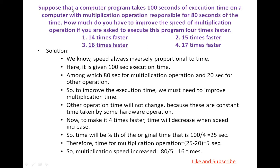Second question: Suppose that a computer program takes 100 seconds of execution time on a computer, with multiplication operations responsible for 80 seconds of the time. How much do you have to increase the speed of the multiplication operation if you are asked to execute this program 4 times faster? We know that speed is always inversely proportional to time. It is given that 100 seconds of execution time, among which 80 seconds for multiplication operations and 20 seconds for other operations.